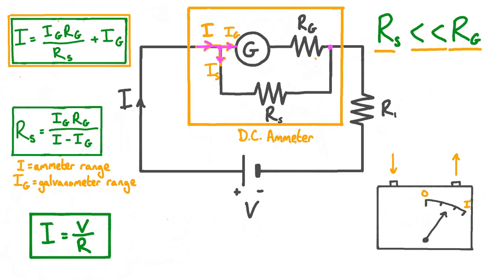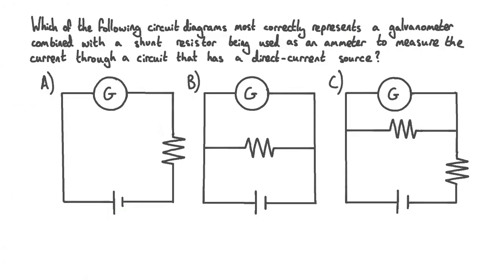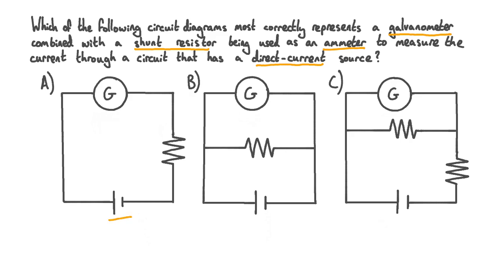Now that we've looked at the principles behind ammeter design, let's have a go at answering a question. Which of the following circuit diagrams most correctly represents a galvanometer combined with a shunt resistor being used as an ammeter to measure the current through a circuit that has a direct current source? We've been given three different circuit diagrams to choose between, each containing a galvanometer represented by a G inside a circle. Each circuit also contains a cell — a type of direct current source — and each contains either one or two resistors connected in various ways.